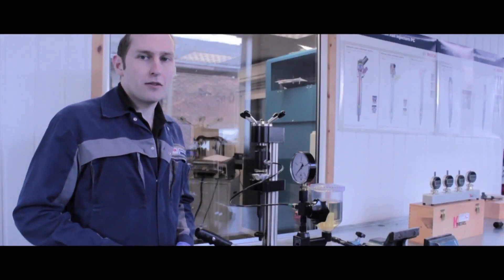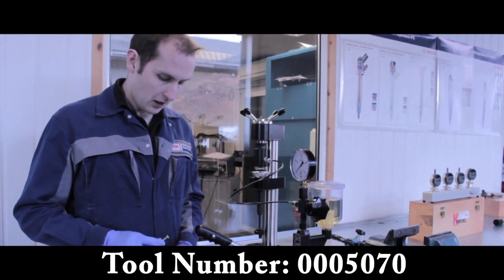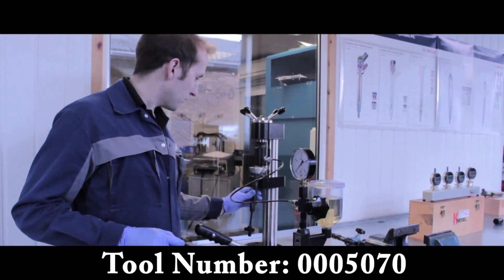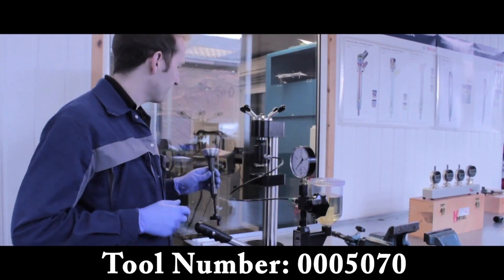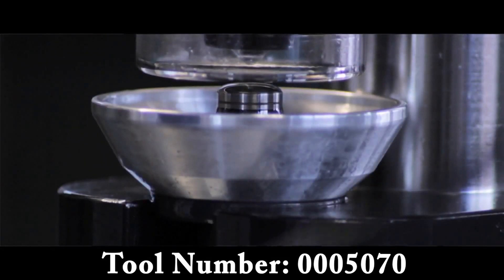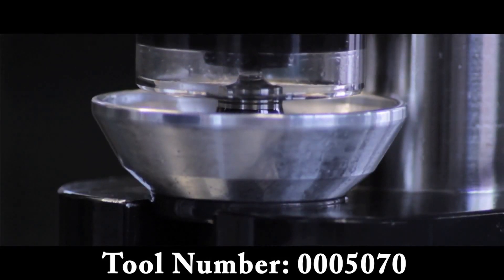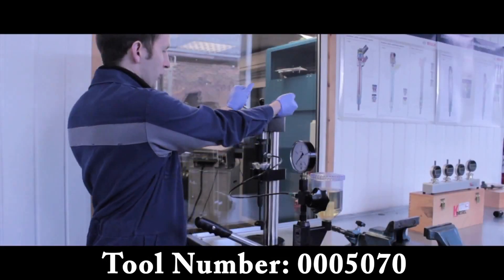Now we have the 0005070. This checks for leakage between the pilot valve and the spindle. Again, simple to use. We'll just fit your valve into place, wind it down, make sure it's locked up tight.